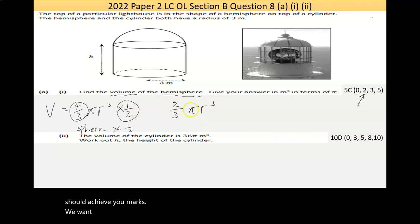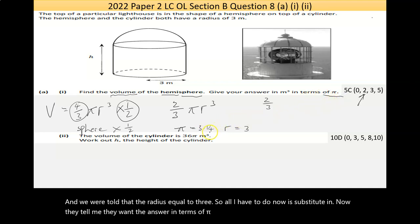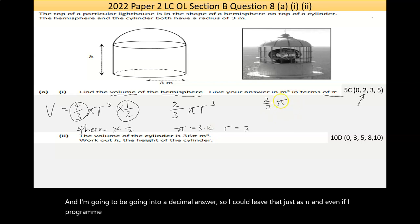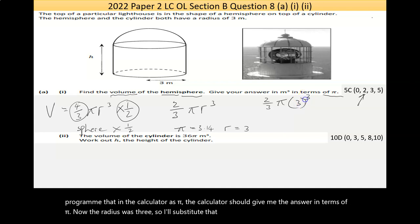Now, we want to now put in our radius. So pi we know. Now, pi, I use the calculator pi, but you can approximate it to 3.14. And we were told that the radius is equal to 3. So all I have to do now is substitute in. Now, they tell me they want the answer in terms of pi. So if I put pi in there as 3.14, I'm going to be going into a decimal answer. So I could leave that just as pi. And even if I program that in the calculator as pi, the calculator should give me the answer in terms of pi. Now, the radius was 3, so I'll substitute that. And it's to the power of 3, not 2.